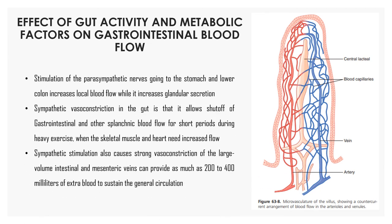Stimulation of parasympathetic nerves going to the stomach and lower colon increases local blood flow, which increases glandular secretion. Sympathetic vasoconstriction in the gut allows shutting off of gastrointestinal and other splanchnic blood flow for short periods during heavy exercise when skeletal muscles and the heart need increased flow. Sympathetic stimulation also causes strong vasoconstriction of large volume intestinal and mesenteric veins, which can provide as much as 200 to 400 milliliters of extra blood to sustain the general circulation.